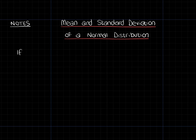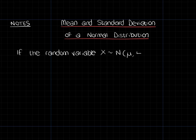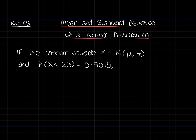So if I have a random variable X which has a normal distribution — I'm not going to know the mean, it's going to have a mean of mu and a standard deviation of 4 — and I'm also going to tell you that the probability that X is less than 23 is equal to 0.9015. We're going to use this to find that mean.